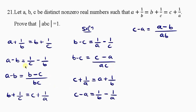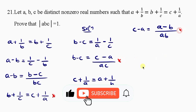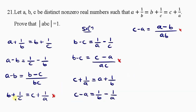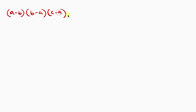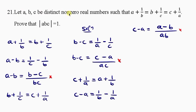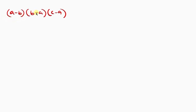So these are the three results we have: A minus B equals B minus C over BC; B minus C equals C minus A over AC; and C minus A equals A minus B over AB. Now we're going to multiply all three left-hand sides together: A minus B, times B minus C, times C minus A.